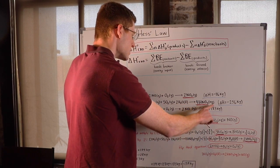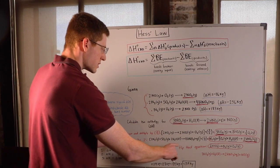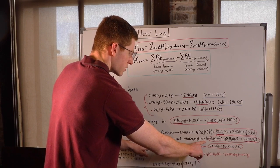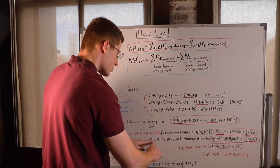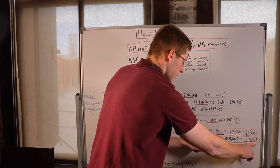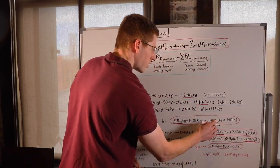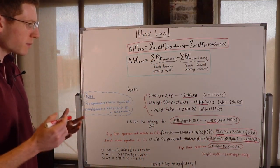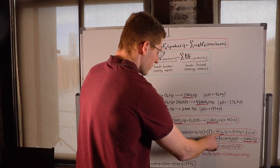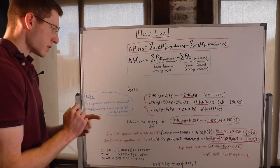So I went ahead and divided this second equation by 2, which is the same thing as multiplying it by 1 half. So when I multiply all of these stoichiometric coefficients by 1 half, this is the result I get right here. So now I have my 2 HNO3 on my product side, just like I need. So I'm getting closer to my answer. Now I have this 3NO2 on my reactant side and this 2 HNO3 on my product side.